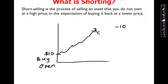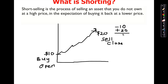Say the price goes up as you anticipate to twenty dollars, and you decide to take profit. You sell that stock — sell to close the position. You get a credit of twenty dollars, so debit ten dollars, credit twenty dollars per share, net profit ten dollars per share. This is something everyone understands — buy low sell high. We call this going long on the market or going long on a stock.